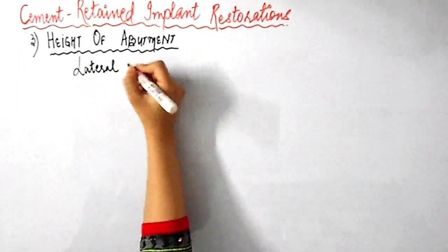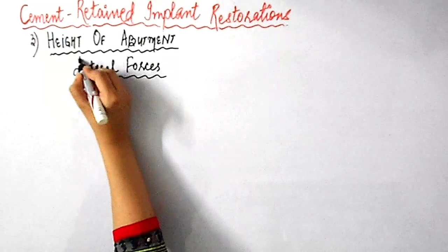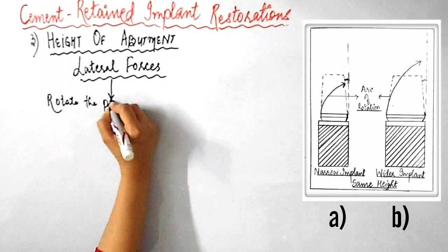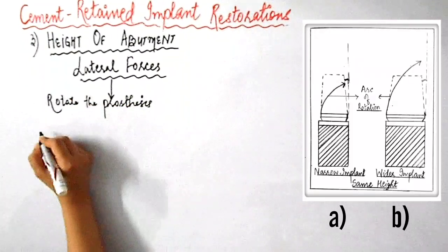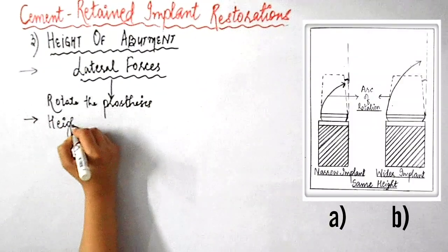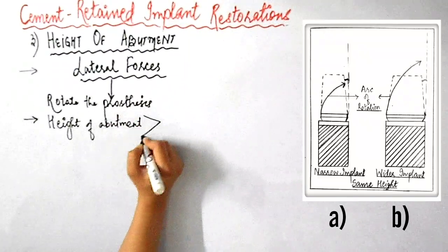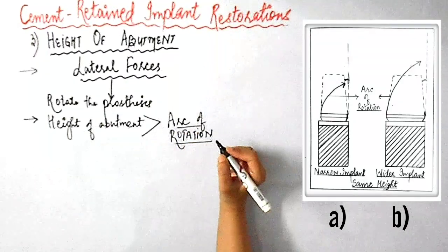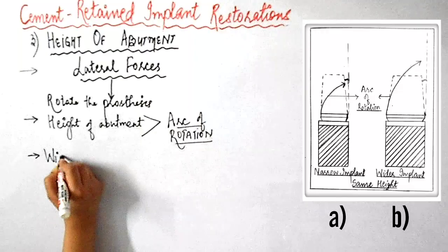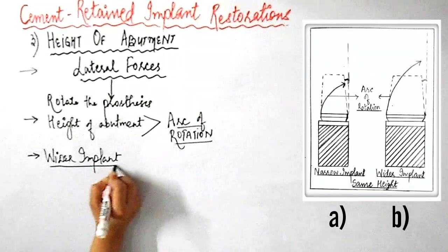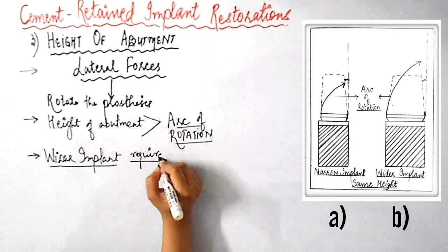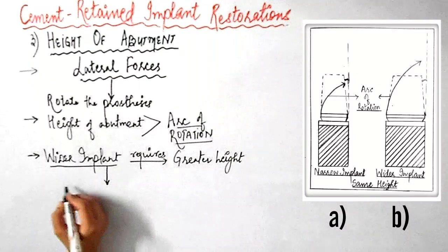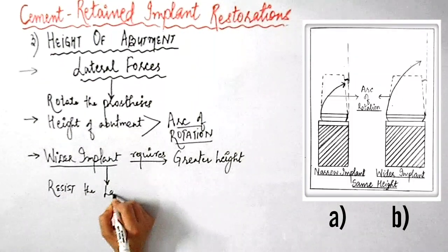These lateral forces tend to rotate the prosthesis upwards on one side of the implant along the arc of rotation, as you can see in this picture. The dislodgement of the cemented restoration occurs along this arc of rotation. The height of the abutment should be greater than the arc of rotation, as shown in part A of the picture. A wider implant requires greater height compared to a smaller diameter implant in order to resist the lateral or tipping forces, as shown in part B.